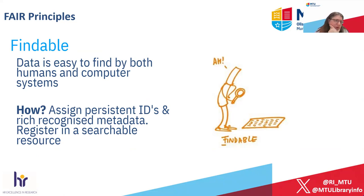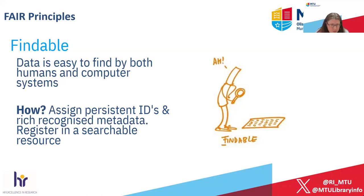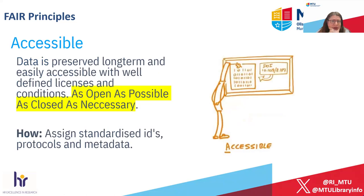So what do we mean by FAIR? Findable — we want to make sure that the data is easy to find by both humans and computer systems. The best way to do this is to assign persistent IDs like a DOI and rich recognised metadata. The best way to do that in turn is to register it in a searchable resource. The main resource we would recommend at MTU is Zenodo as a data repository — it essentially assigns the persistent ID for you, as well as standardised metadata following international best practice.